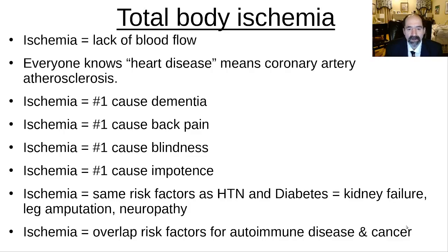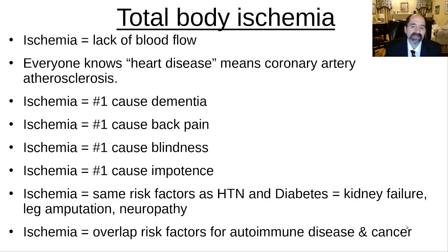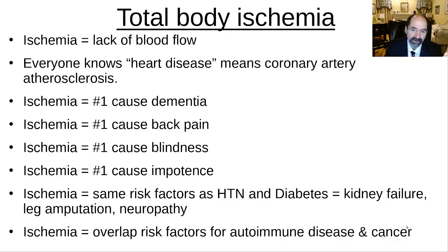Ischemia is also the most common cause of back pain. By far the most common problem one sees on CT scans and MRI scans of the spine — the entire spine: cervical, thoracic, and lumbar — is degenerative disc disease. The primary cause of degenerative disc disease is due to a lack of blood flow. There were papers written about an association between abdominal aorta atherosclerosis, lumbar artery atherosclerosis, and degenerative disc disease. But it's not just lumbar spine — it's all of the degenerative disc disease of the spine.